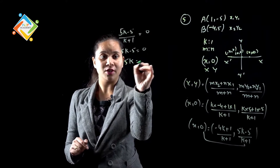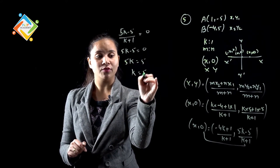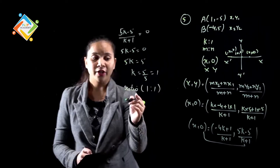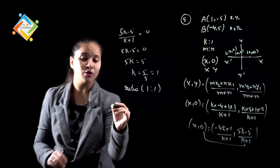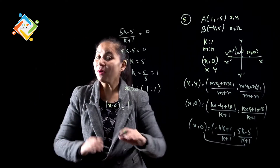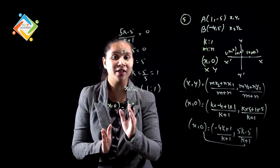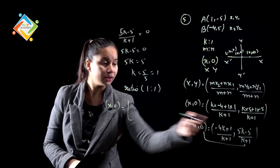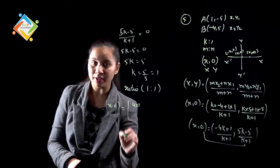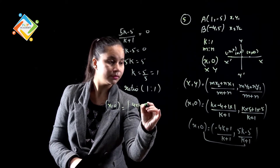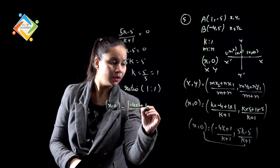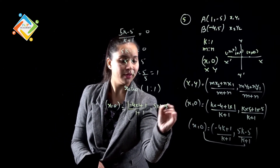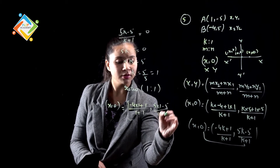So, 5k - 5 = 0 क्योंकि 0 में k+1 का multiplying करेंगे तो 0 आएगा। And 5k = 5, so k = 5/5 = 1. तो k की value 1 आगी — ratio 1:1. अब हमें x,0 की value भी find out करनी है क्योंकि हमें वो point find out करना है। x की value: minus 4k, k की value 1, plus 1, upon k+1 याने 1+1.